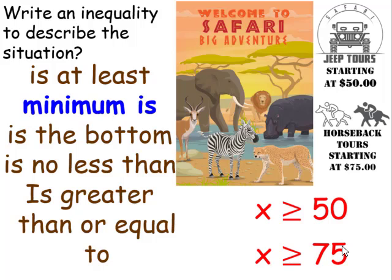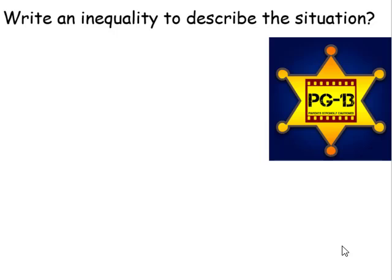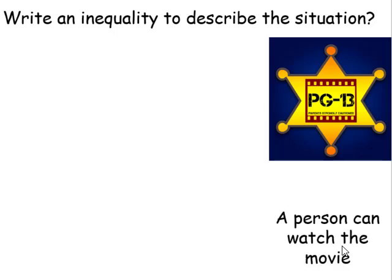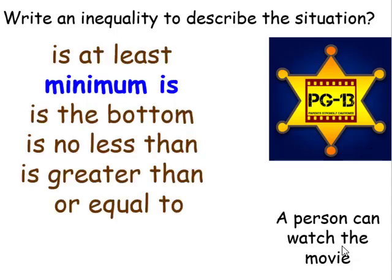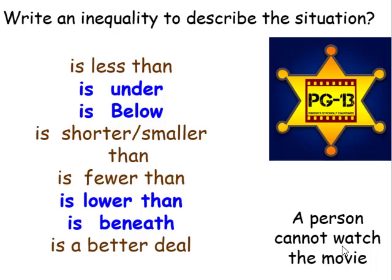Even when you're not sure which inequality to use, think about it a little bit and you might be able to figure it out. The following film has been approved for all audiences — especially when it's rated PG-13, this is an inequality. We could write it in two ways: for who can watch the movie, the minimum age would be 13, so x is greater than or equal to 13. Or we could write it for a person who cannot watch the movie — someone under, below, or lower than this age — and this would be x is less than 13.